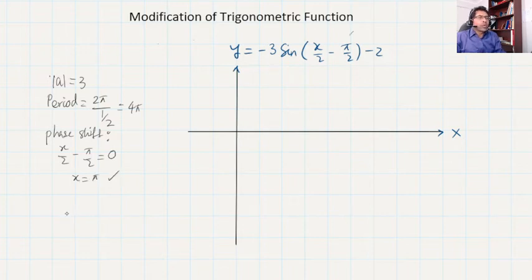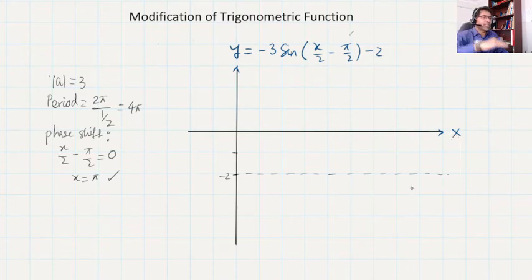And then we have vertical shift, which is -2. It is basically indicating that our graph will be shifted down by -2. So this will be our new axis. It means the center of the graph will be here. The x-axis is shifted down and this is our new x-axis. Remember that the graph starts from that line or the center of the graph will be there.